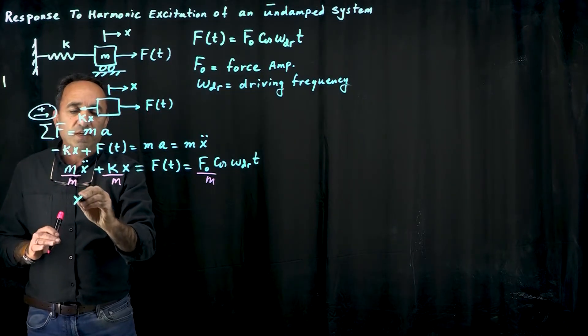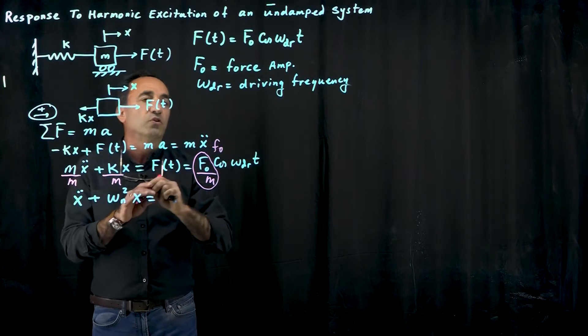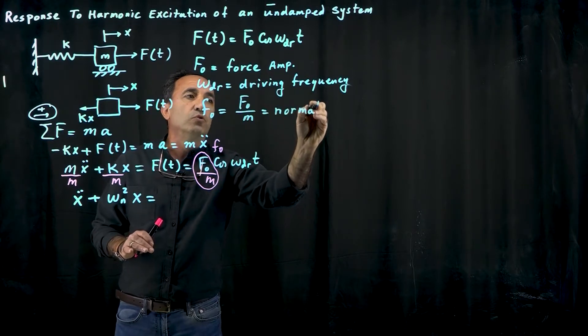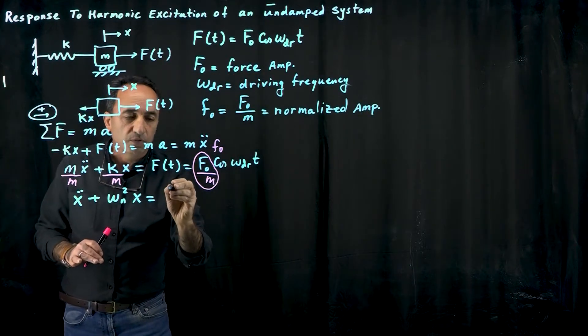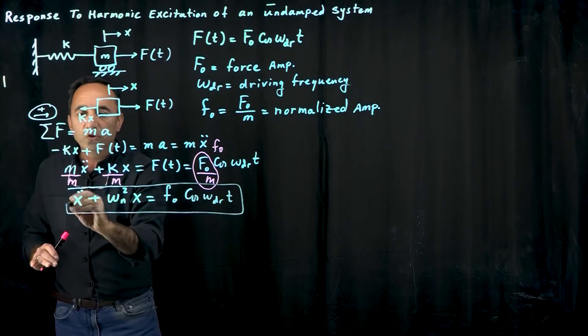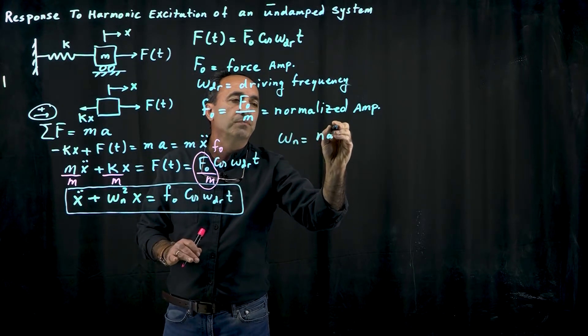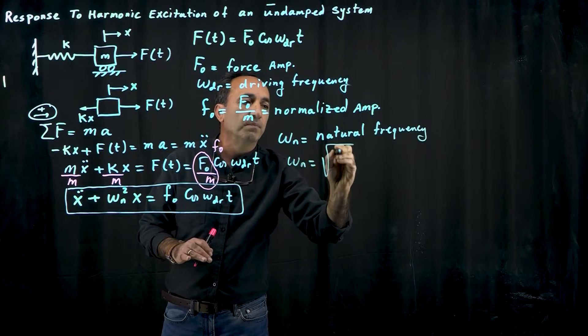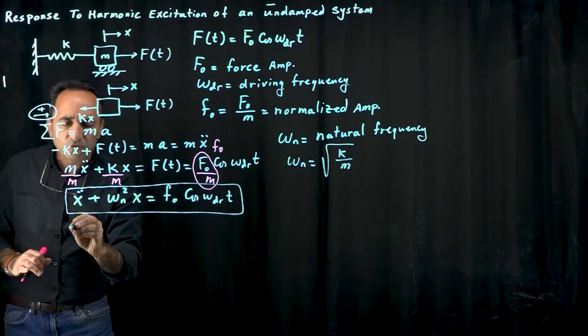Normalizing means we divide by the leading coefficient, the mass. We get the equation x double dot plus omega_n squared x equals lowercase f0 cosine omega_dr t. Lowercase f0 is uppercase F0 divided by m, that's called normalized amplitude. This is the equation that I want to solve now. Omega_n is the natural frequency defined as square root of k over m. This k could be an equivalent spring and m could be an equivalent mass.